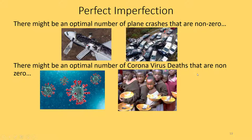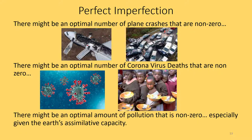Both of those examples are tough to hear, but that doesn't make them any less true. With that in mind, there might be an optimal amount of pollution that is non-zero, especially given the fact that the Earth has an assimilative capacity that allows it to accept some pollution and render it non-lethal to the environment. In Chapter 5 of this class, we'll be using math to calculate the optimal amount of pollution, and in all cases we'll get a non-zero level of emissions.